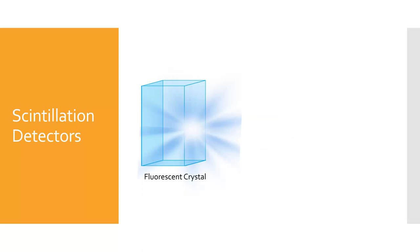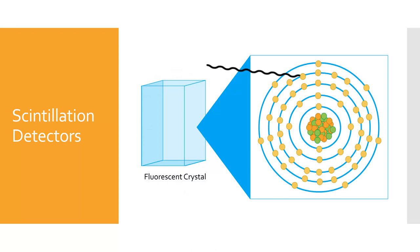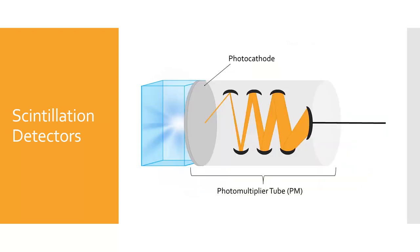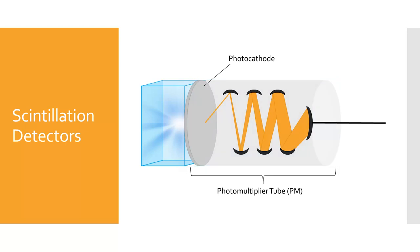Next, we will look at scintillation detectors. Scintillation is the immediate emission of light when struck by radiation, sometimes referred to as fluorescence, and it takes place in a special crystal. When the radiation interacts with the crystal, an electron in the crystal's atom is moved to a higher electron shell, but it doesn't stay there. The electron immediately falls back into place, giving off energy as visible light. That burst of light is converted into electrons when it strikes the photocathode of the photomultiplier tube, or PM tube, through the photoelectric effect.